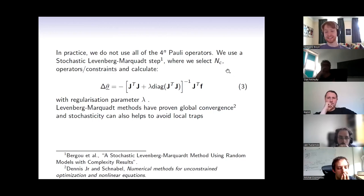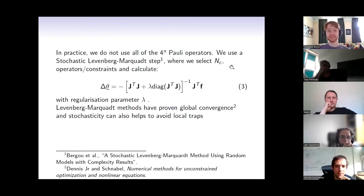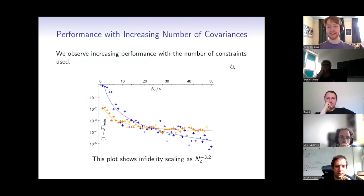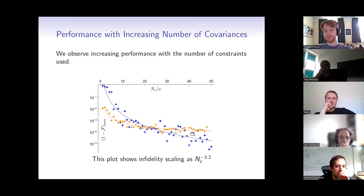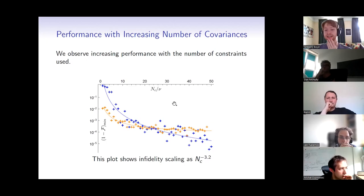Levenberg-Marquardt methods have a series of advantages, including some degrees of guarantees for convergence. The stochasticity of randomly selecting operators helps us to avoid local traps. How big should NC be? The answer is: as big as you can get, because performance increases with increasing number of constraints. This is infidelity on the y-axis and increasing number of constraints on the x-axis. The blue curve is the no-noise case, and the orange is shot noise which plateaus off once it reaches the shot noise floor.